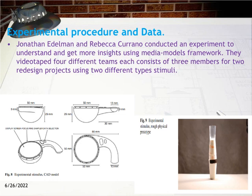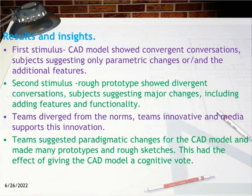Instructions for the first stimulus: 'Do whatever is necessary to take the model forward. This product enables you to analyze and identify the material composition of objects.' Instructions for the second stimulus: 'Do whatever is necessary to take the model forward. This product enables you to project your voice to a specific target.' Results and insights: the first stimulus — a CAD model — showed convergent conversations, with subjects suggesting only parametric changes or additional features. The second stimulus — a rough prototype — showed divergent conversations, with subjects suggesting major changes including adding features and functionality.